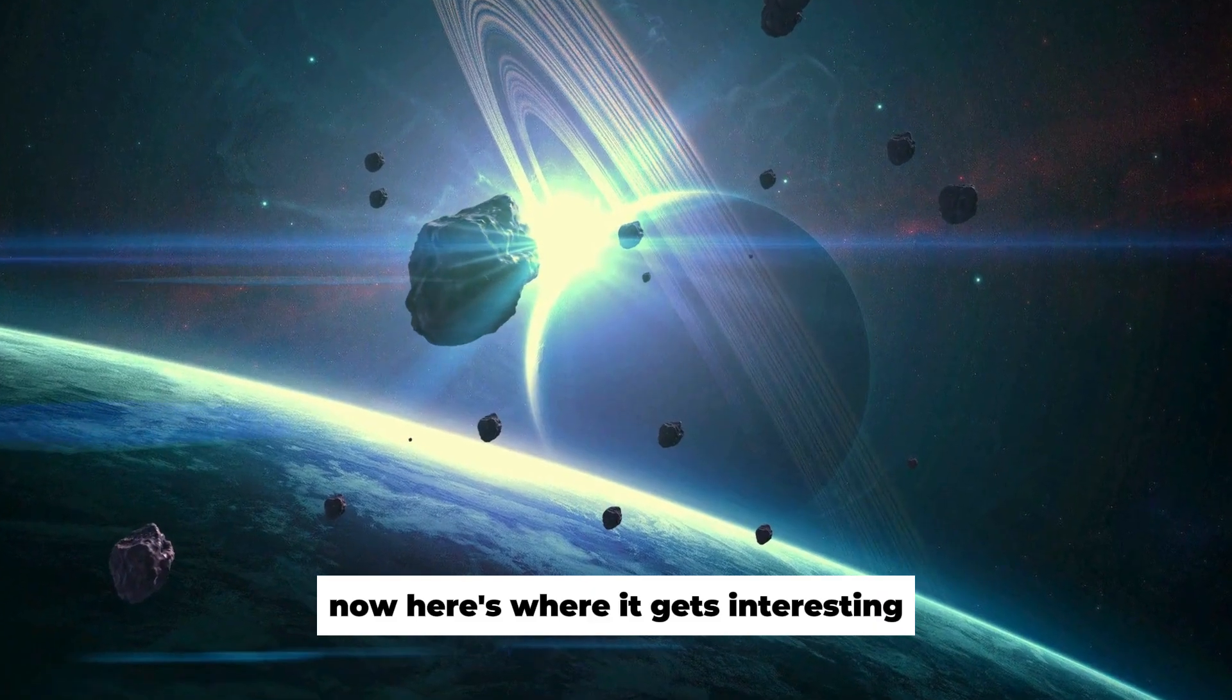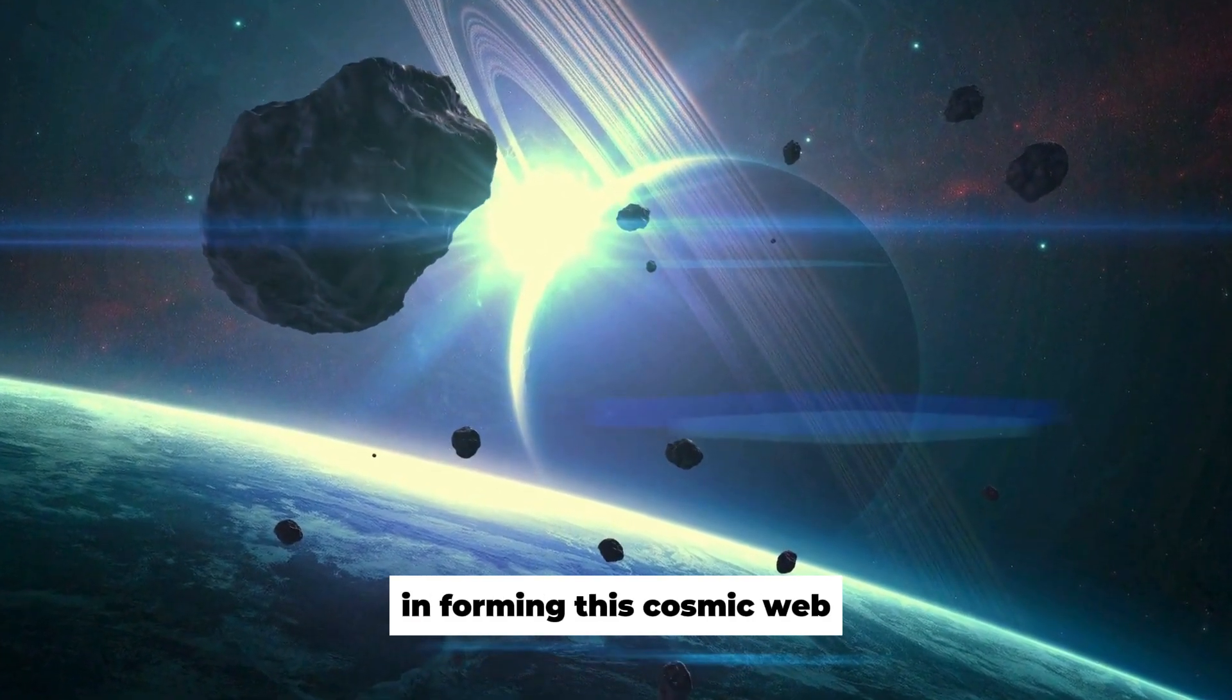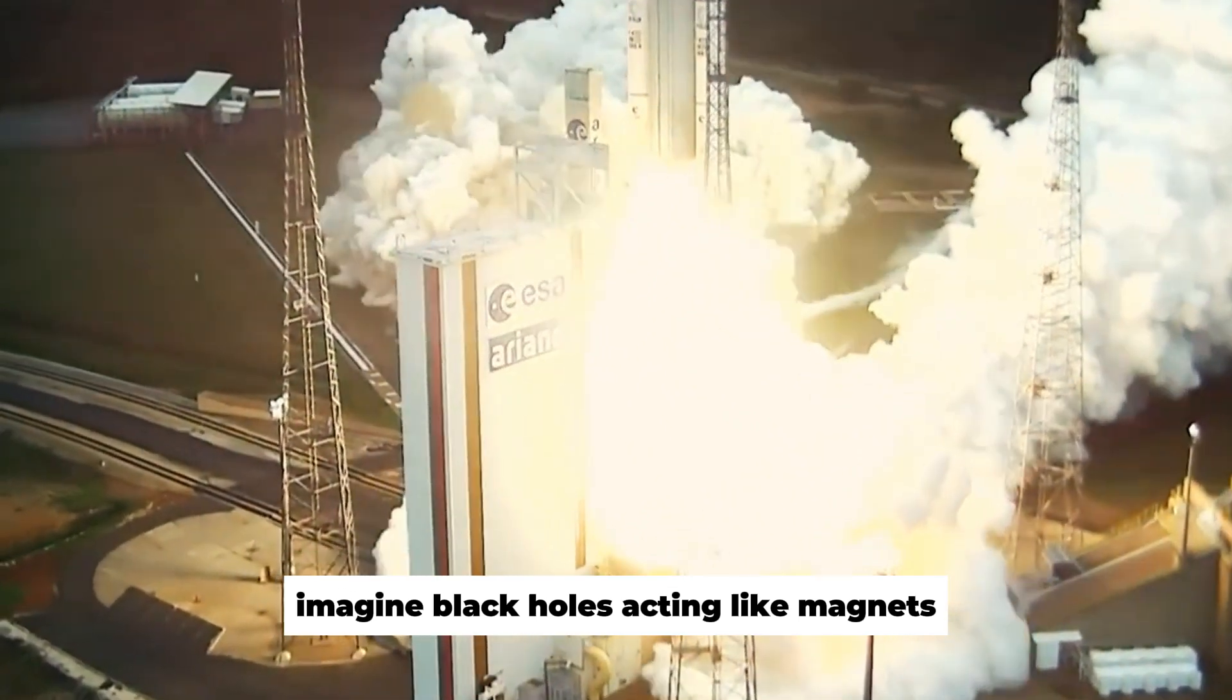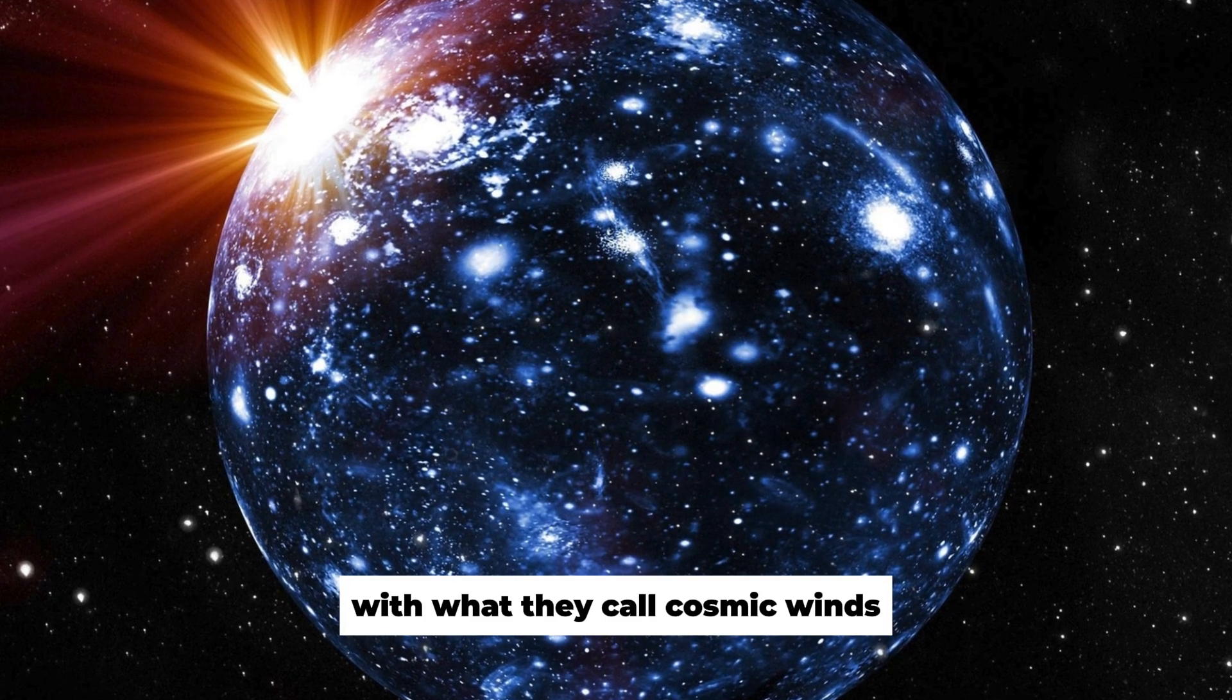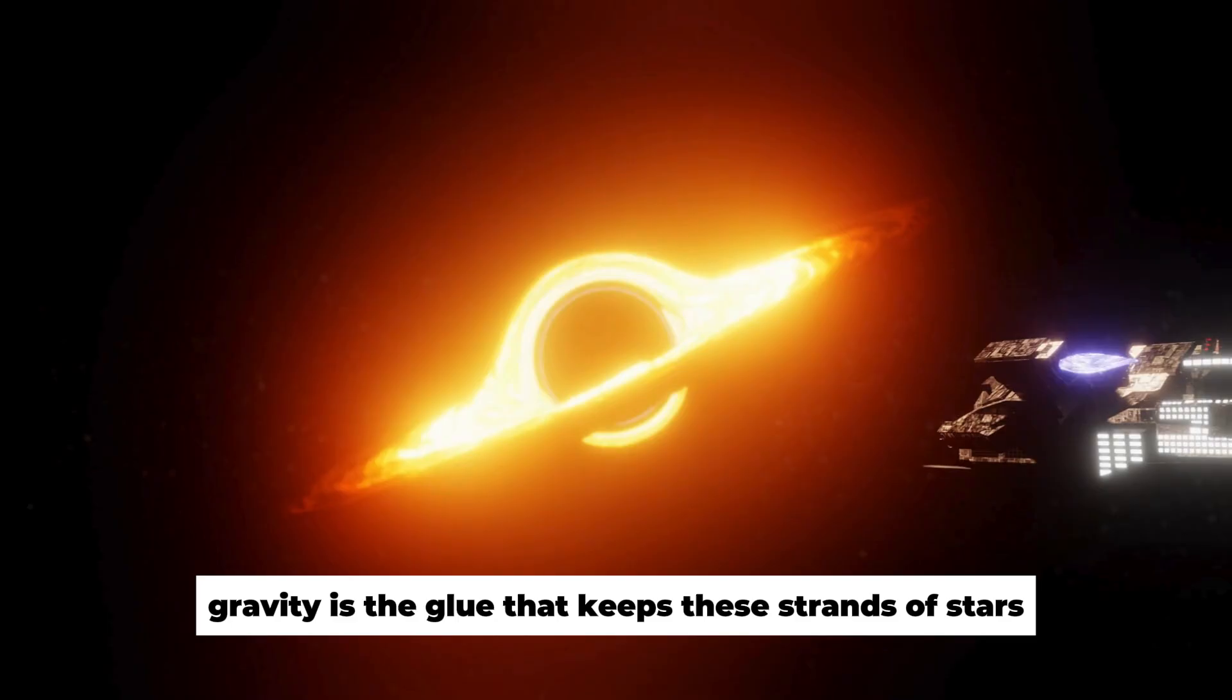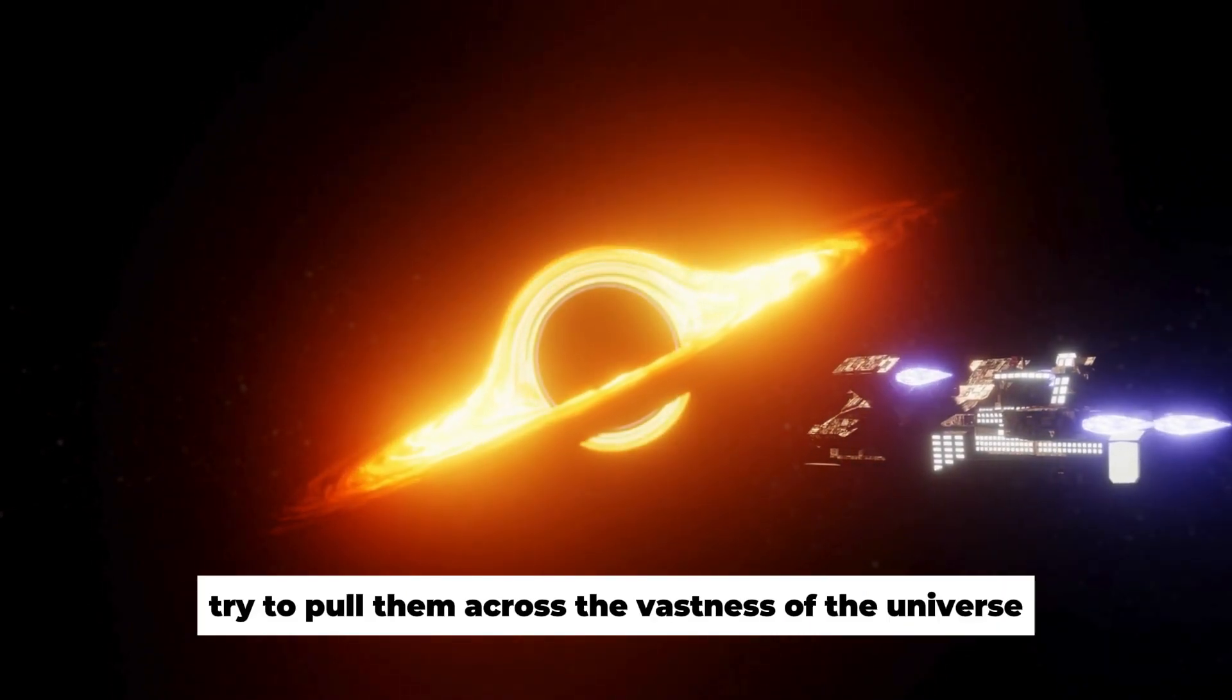Now here's where it gets interesting. The researchers think that black holes played a crucial role in forming this cosmic web. Imagine black holes acting like magnets, drawing matter together with their gravity. But wait, they occasionally fling stuff far away with what they call cosmic winds. Gravity is the glue that keeps these strands of stars and dust connected, even as the cosmic winds try to pull them across the vastness of the universe.